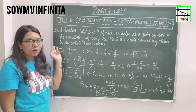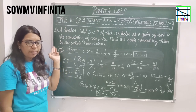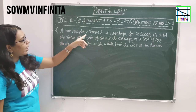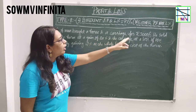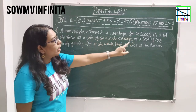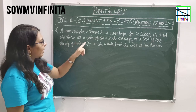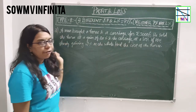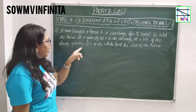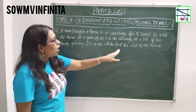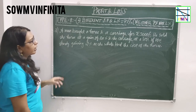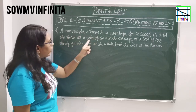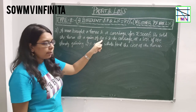Now the third and last problem: a man bought a horse and a carriage for 3,000 rupees. He sold the horse at a gain of 20% and the carriage at a loss of 10%, thereby gaining 2% on the whole. Find the cost of the horse.